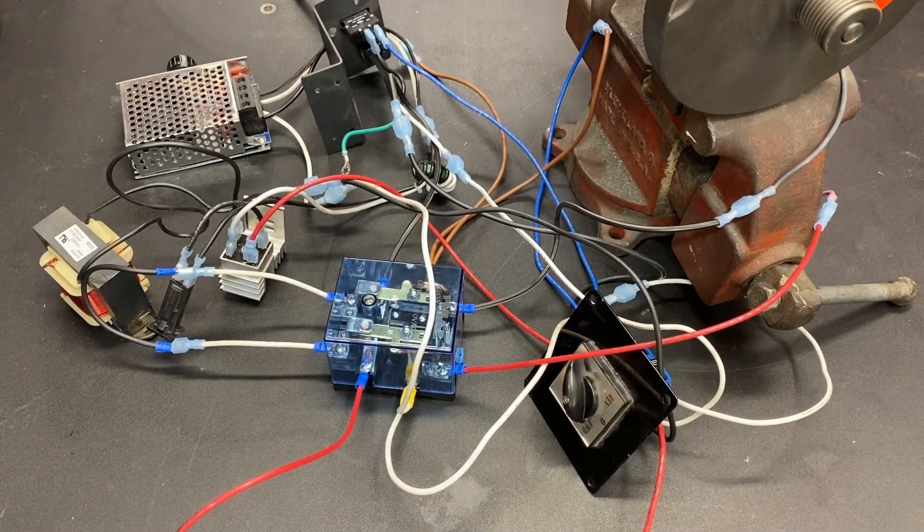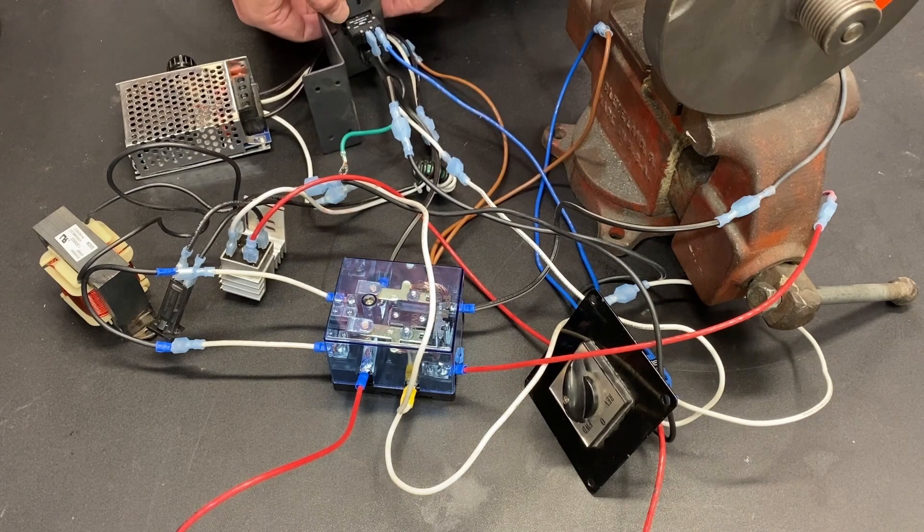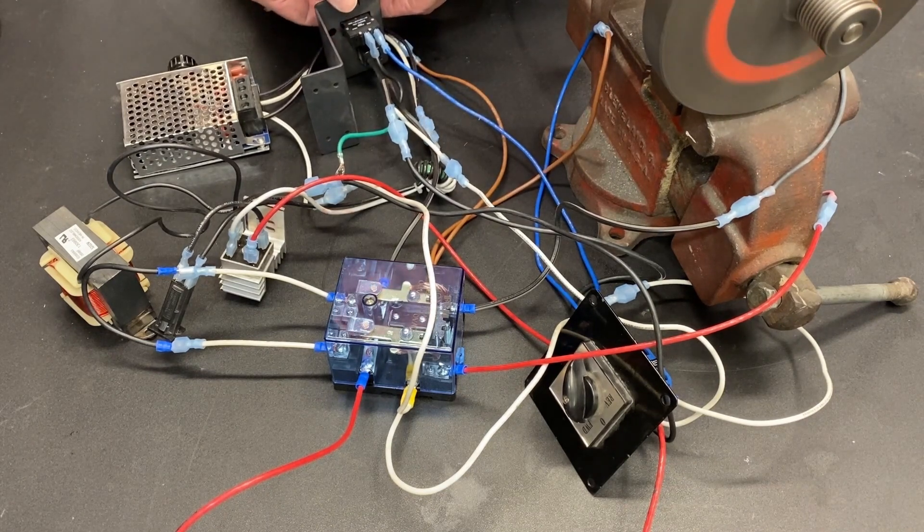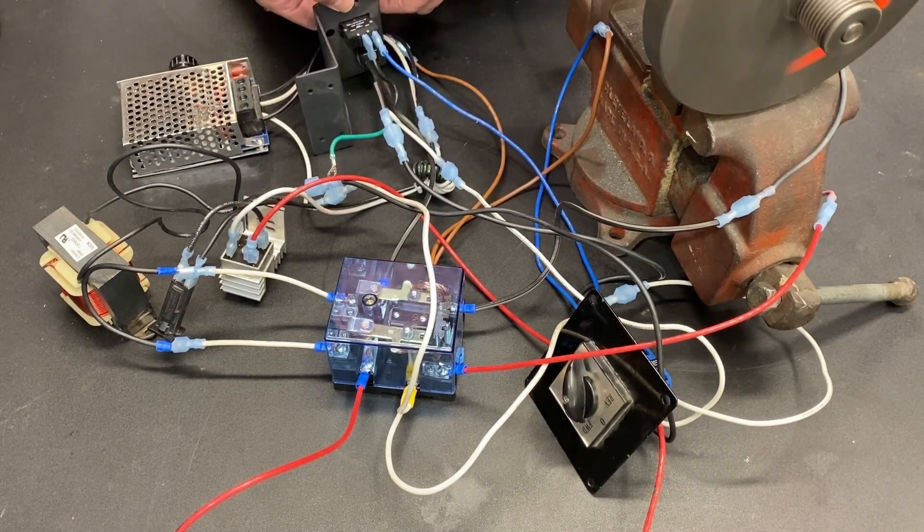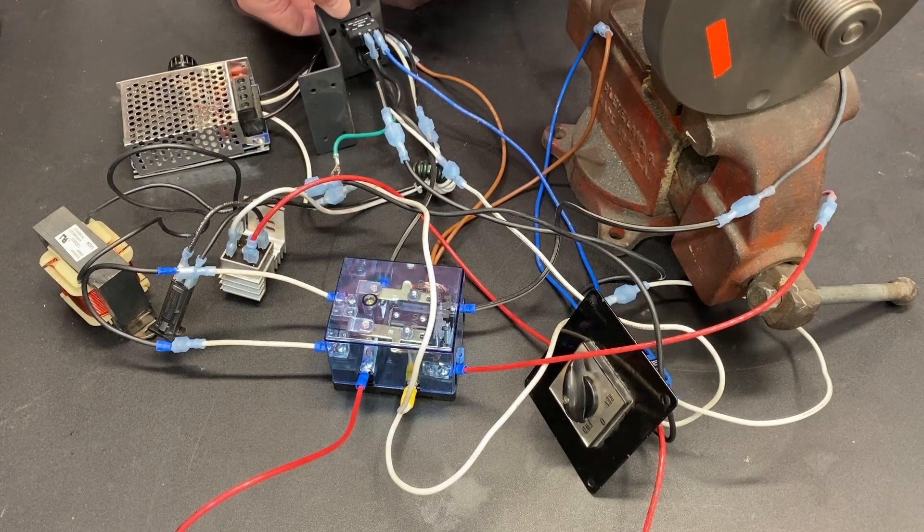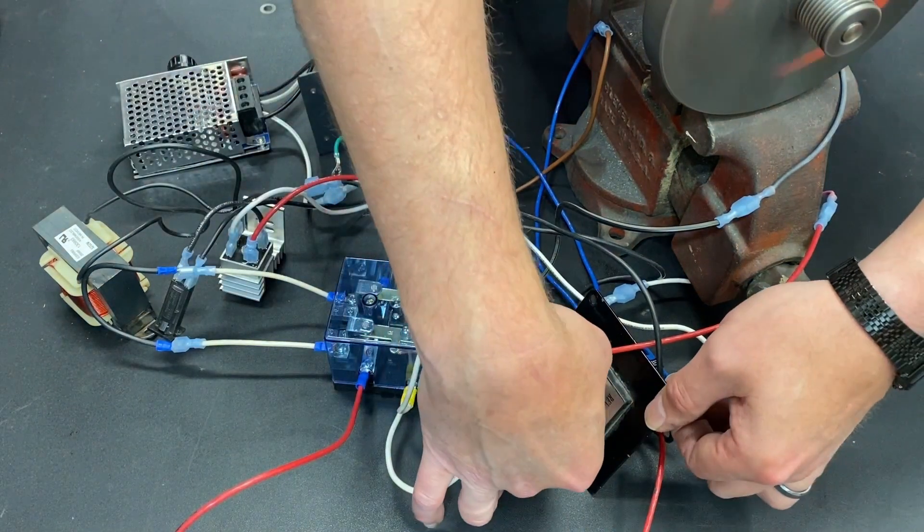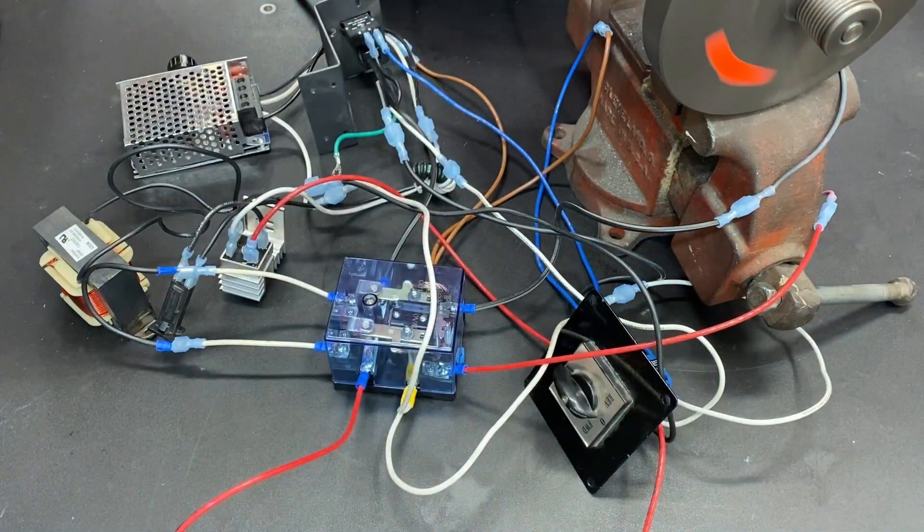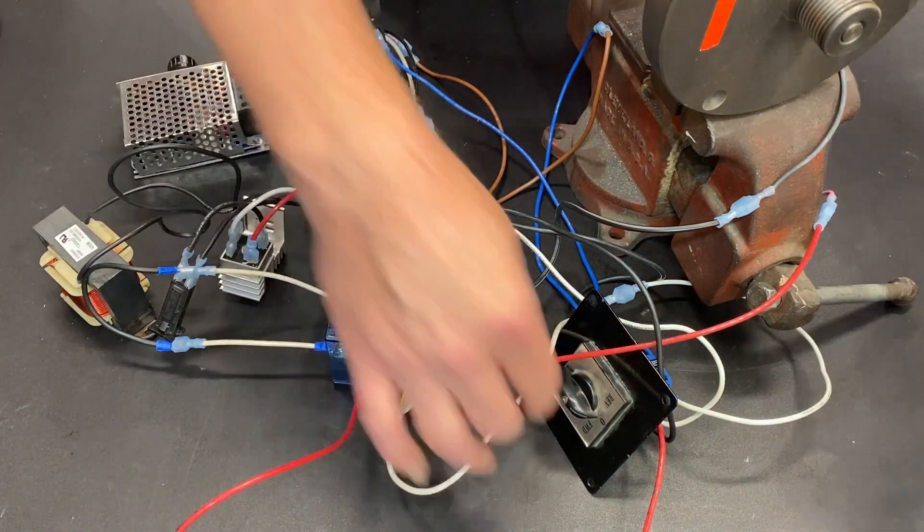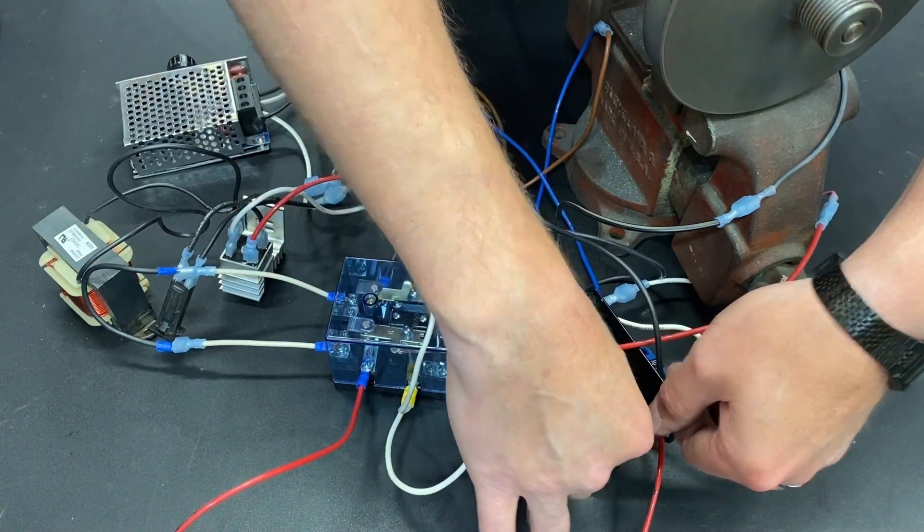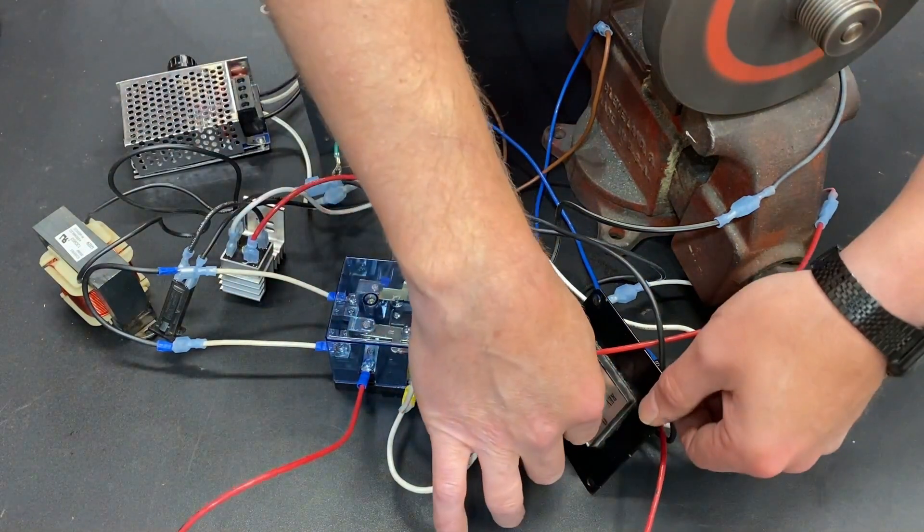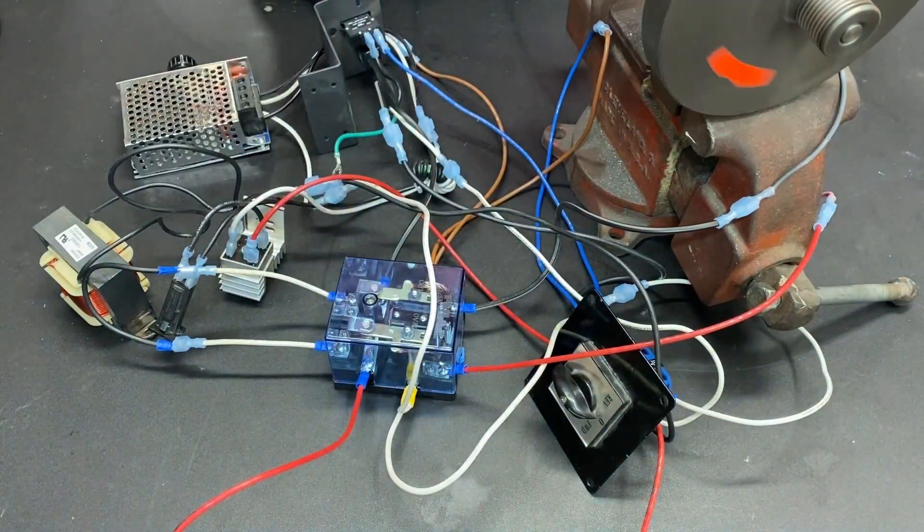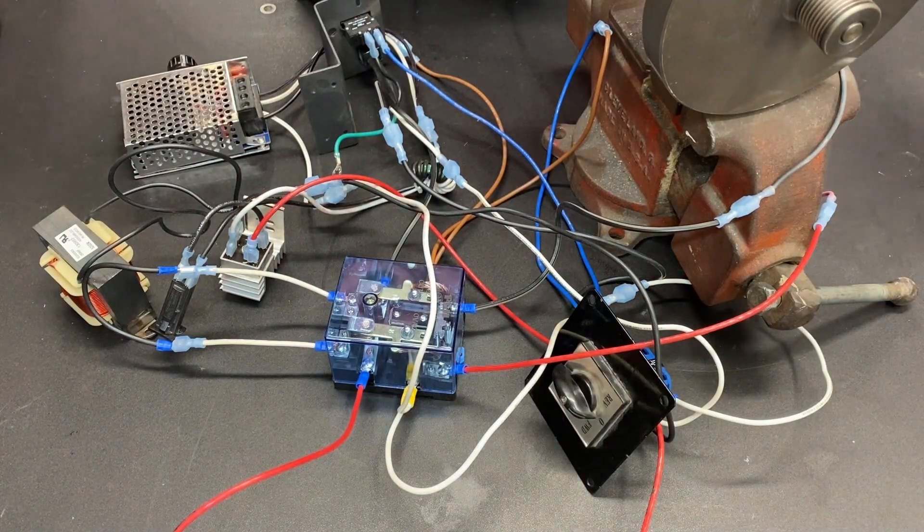So here's the bench test with the motor. Comes on. We cut main power. Brake engages. We turn it to the off position on the direction control. Brake engages. We turn it to reverse. Turn it off. Brake engages. So this is a fantastic setup.